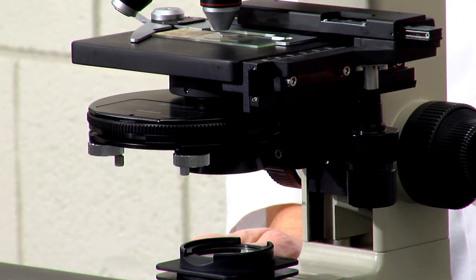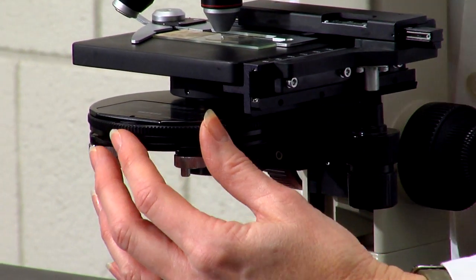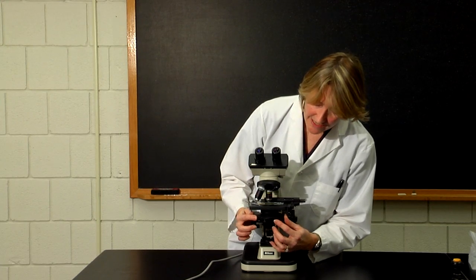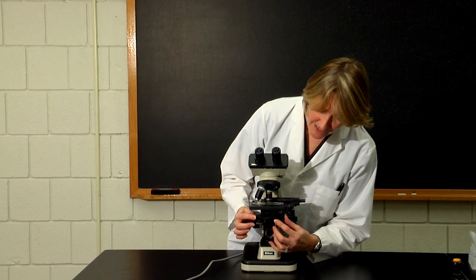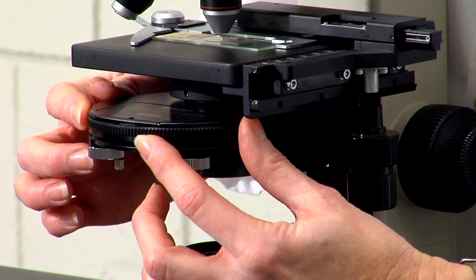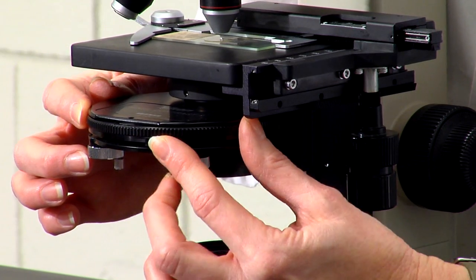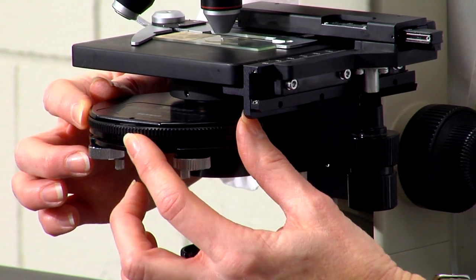The iris diaphragm is on the front of the rotating disc of the condenser lens system. It is a little slider, and as you open and close it, more or less light will be allowed to shine onto the object.